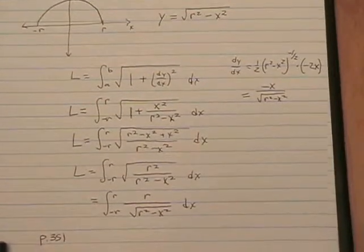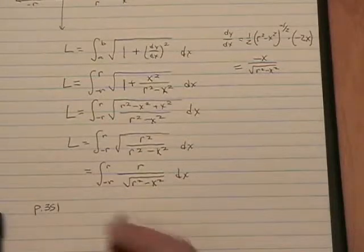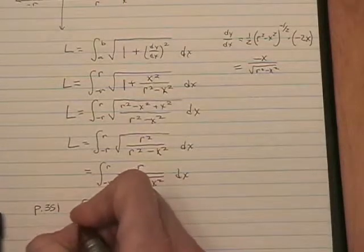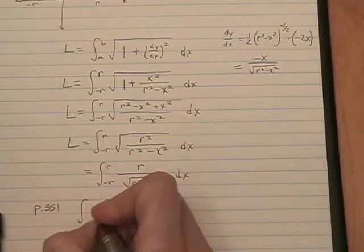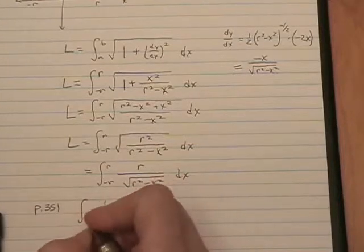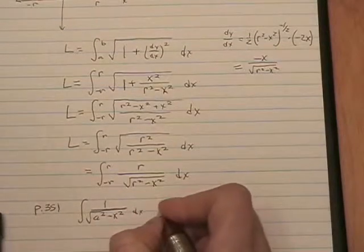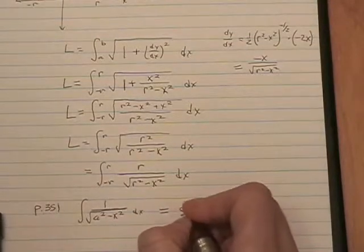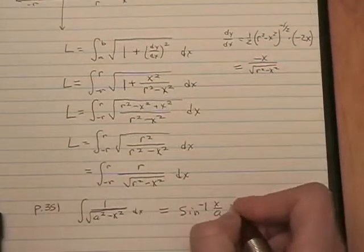And that formula says that the integral of 1 over the square root of a squared minus x squared, dx, is equal to the inverse sine of x over a plus c.